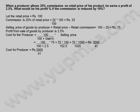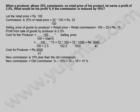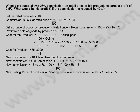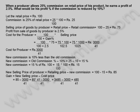New commission is 10% less than the old commission, so new commission = 25 − 10 = 15 rupees. New selling price of producer = retail price minus new commission = 100 − 15 = 85 rupees.